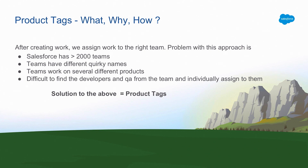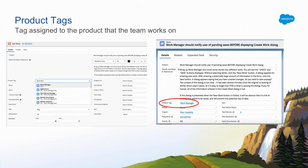Another issue is that teams work on multiple different products. For example, my own team — the GUS team — owns the sprint wall, the work manager, team dependencies, and epics. So it makes more sense to assign a bug to the product the team works on rather than the team itself. This is where product tags come in handy. A product tag is simply the tag assigned to the product which the team works on.